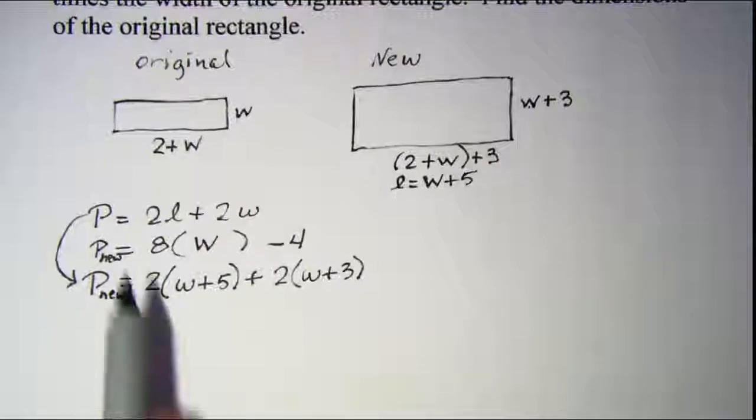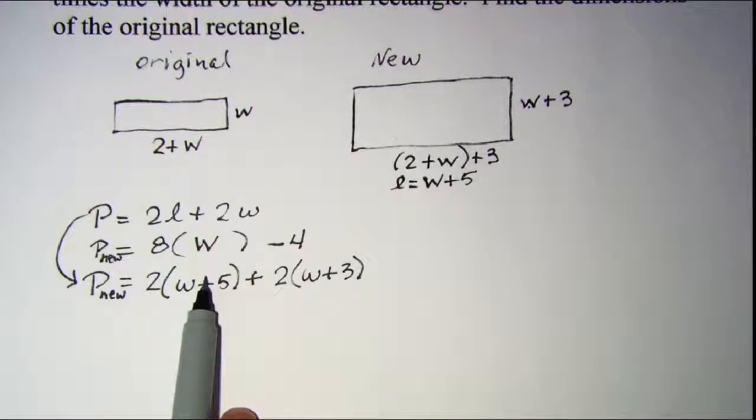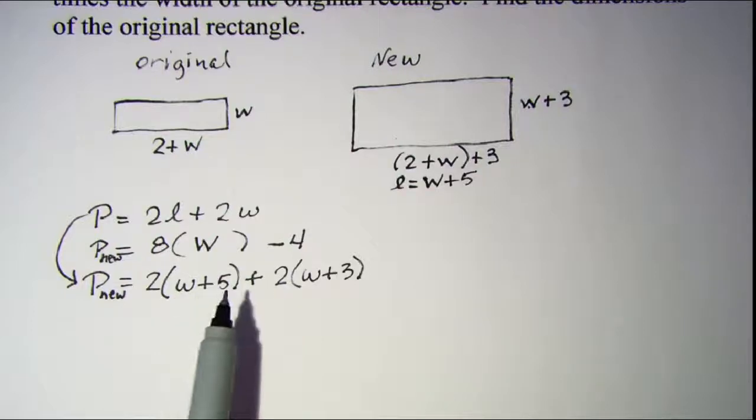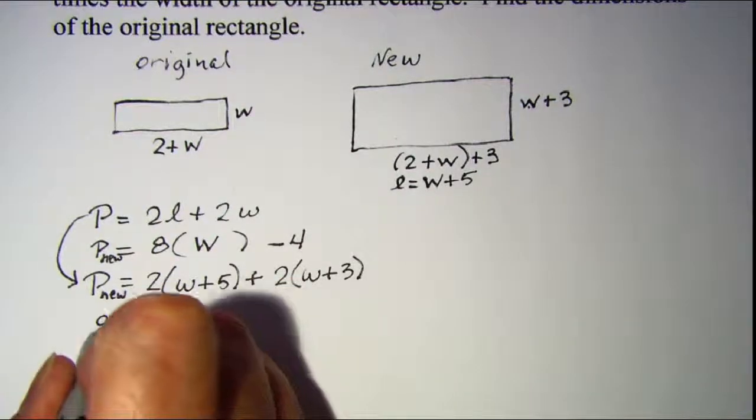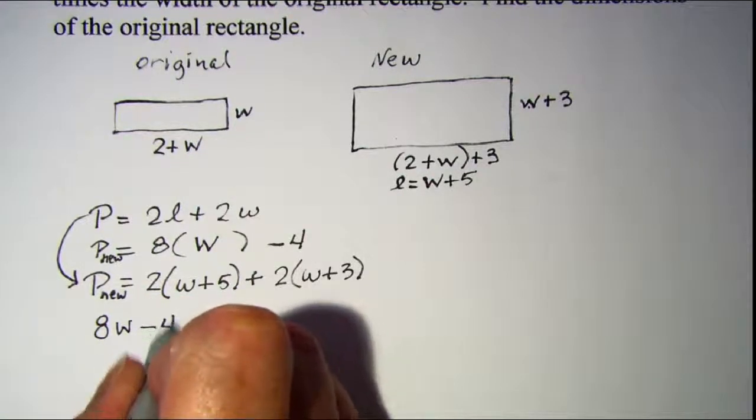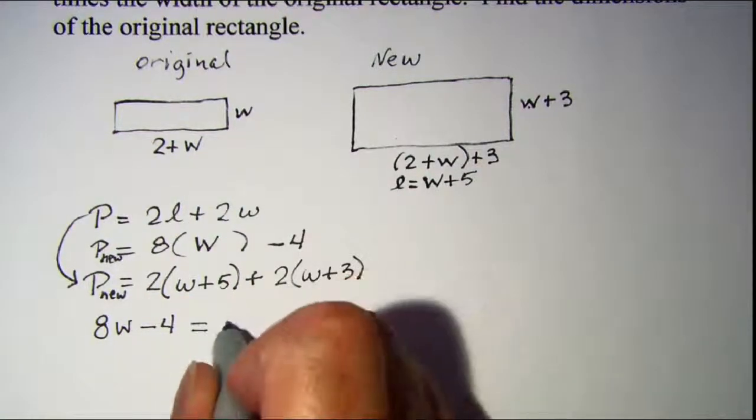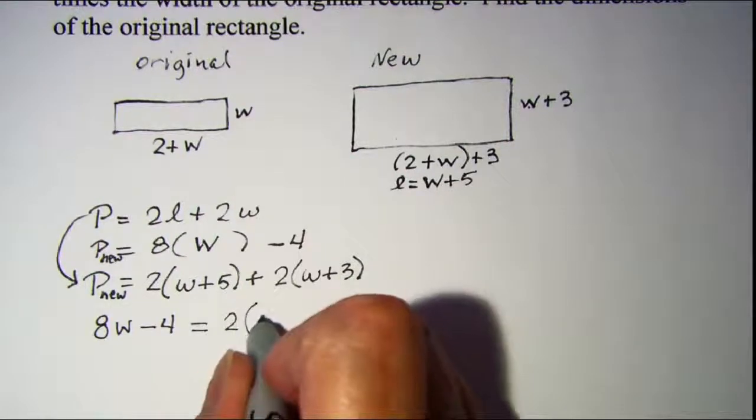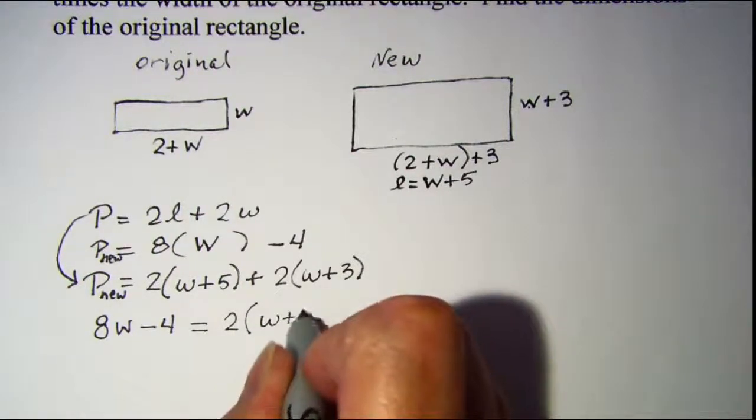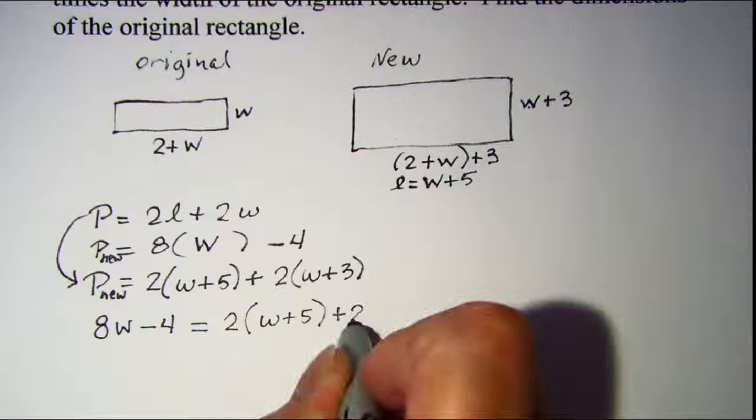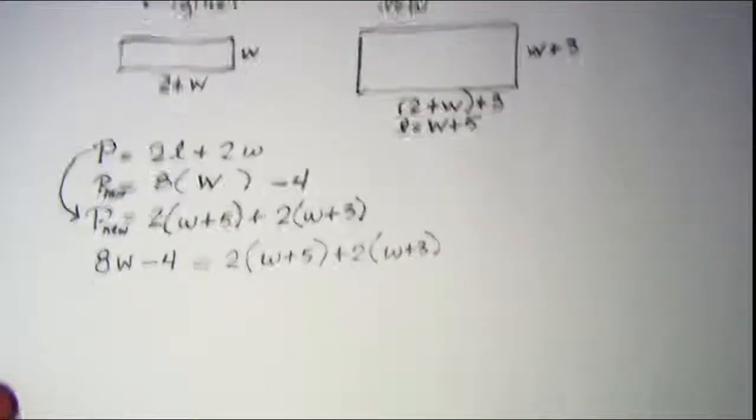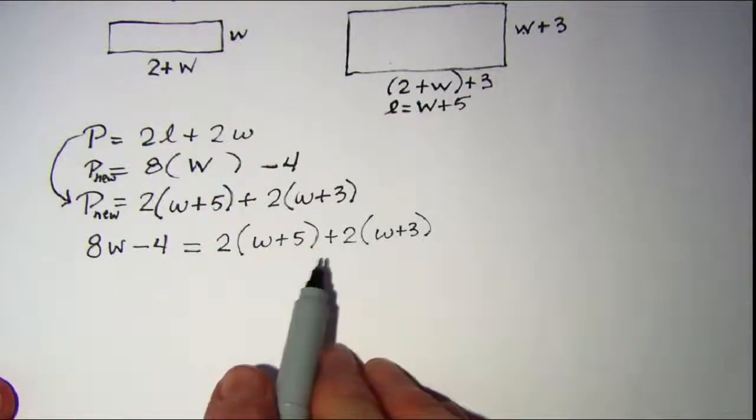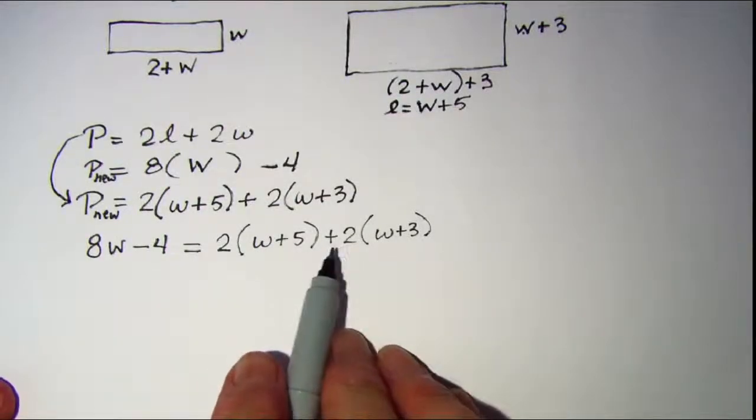So since these expressions are both equal to the perimeter of my new rectangle, I can set them equal to each other. So I can write 8w - 4 = 2(w + 5) + 2(w + 3). Now this gives me an equation that I can work with to find w.